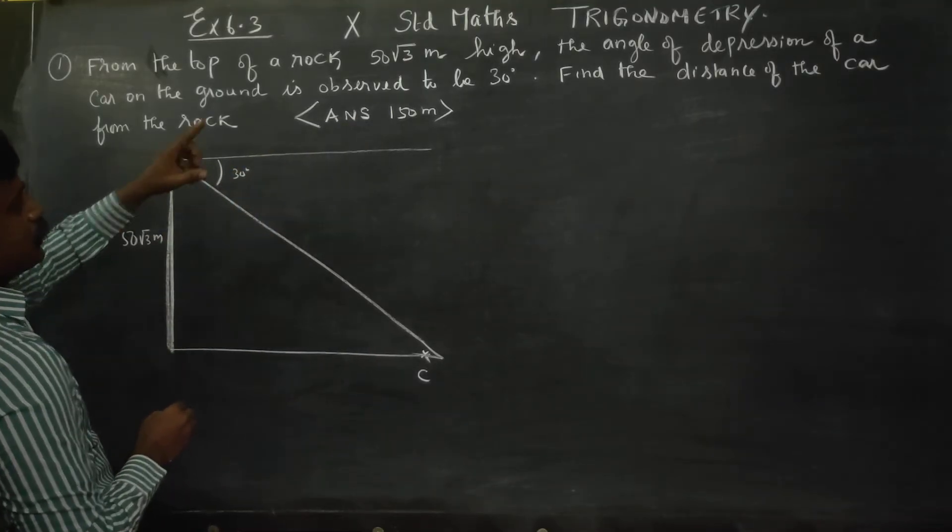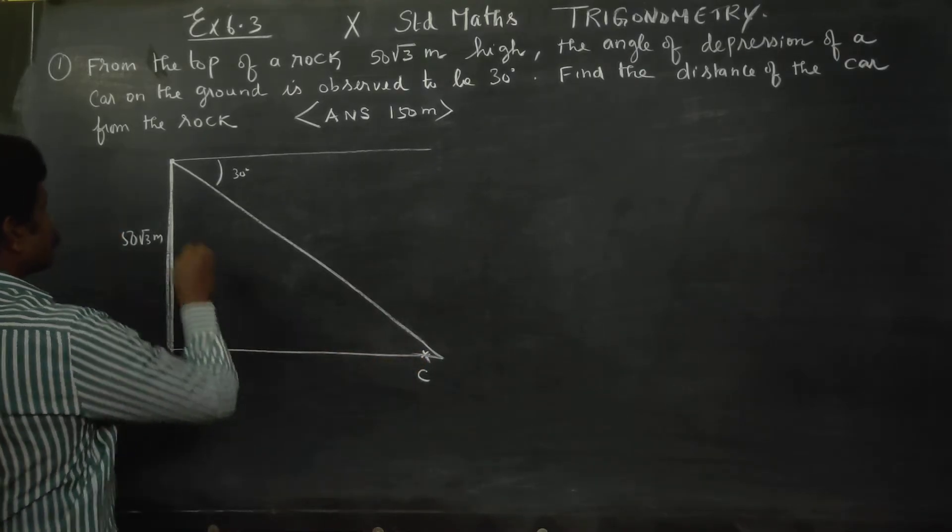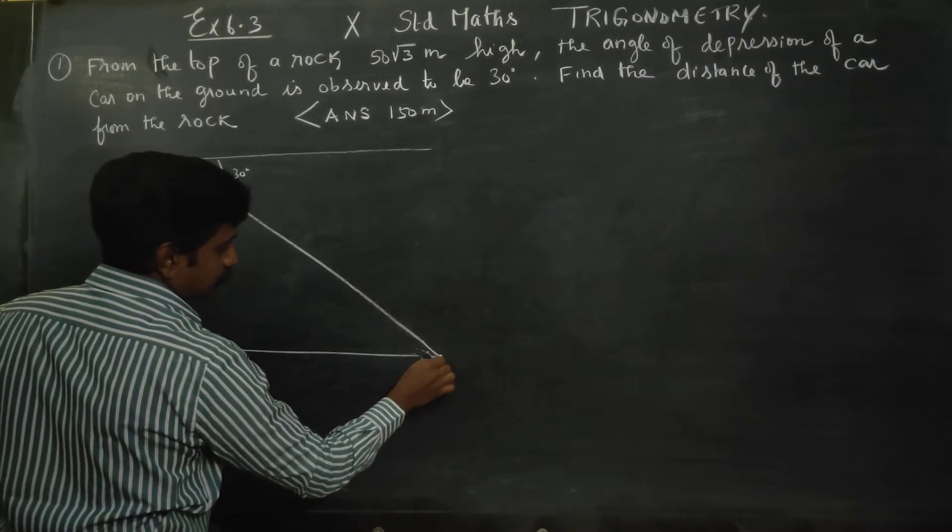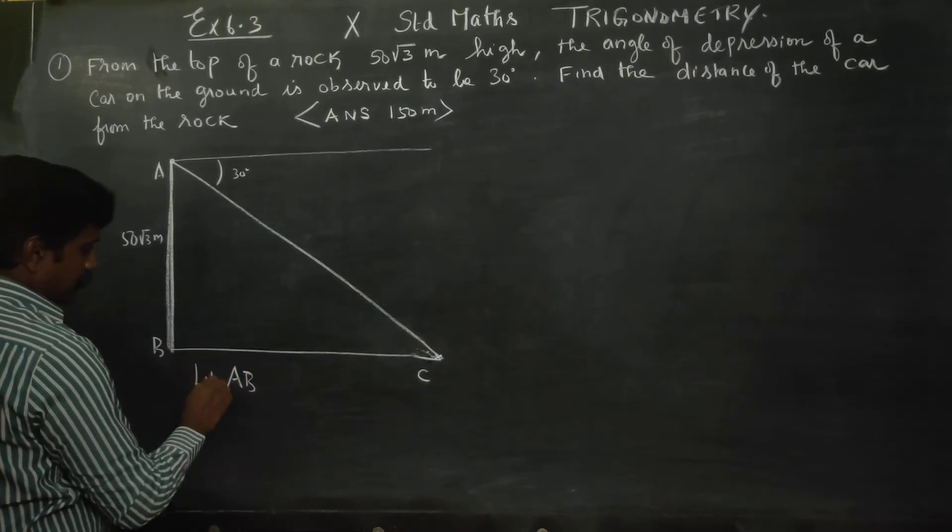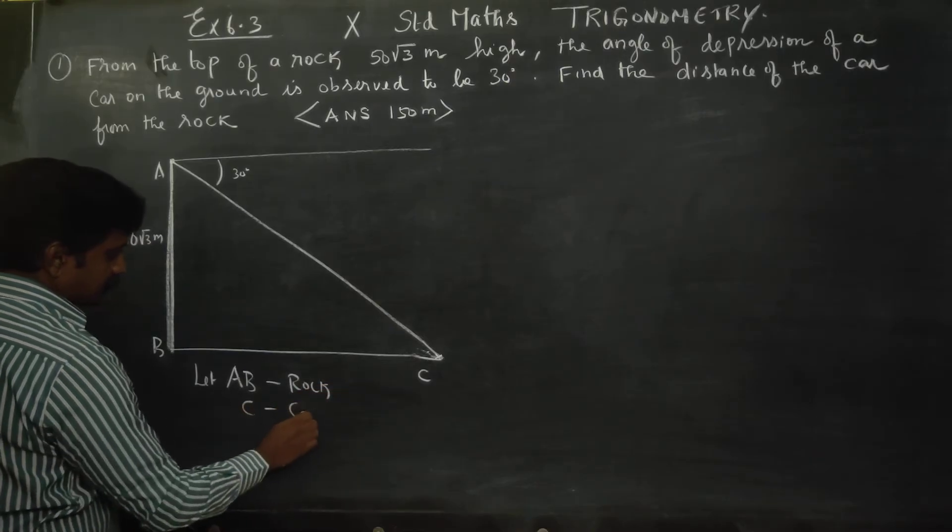Top of the rock 50 root 3 meters. Find the distance of the car from the rock. If we say A, B is rock, C is car. Let A, B be rock, C is car.